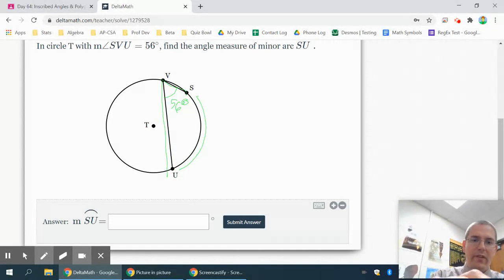Well since this is an inscribed angle, it's half the arc. So if this is 56, and it's half of SU, that means I can do 56 times 2 to get SU. That has to be bigger for an inscribed angle. They match for centrals, bigger for inscribed. So that's going to be 112 when I multiply that by 2.